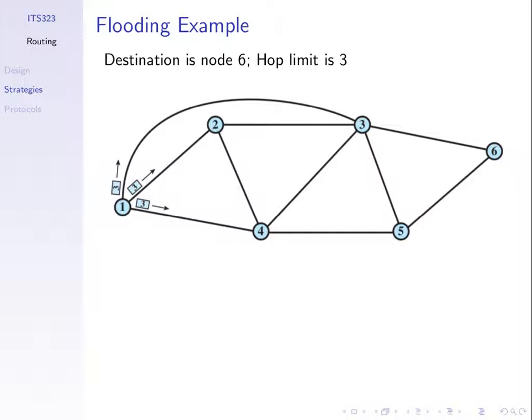Flooding is useful if we want to send data across the minimum hop path — maybe not the minimum cost path, but the minimum number of hops. For example, we sent to three neighbours, three sent to its neighbours, two to its neighbours, and so on. One copy from node one to destination six takes the minimum hop path — one to three to six. Other copies take longer paths, such as one, four, five, six.